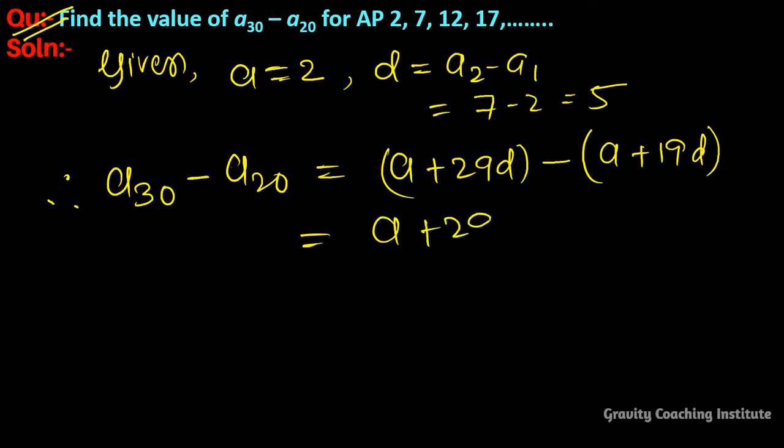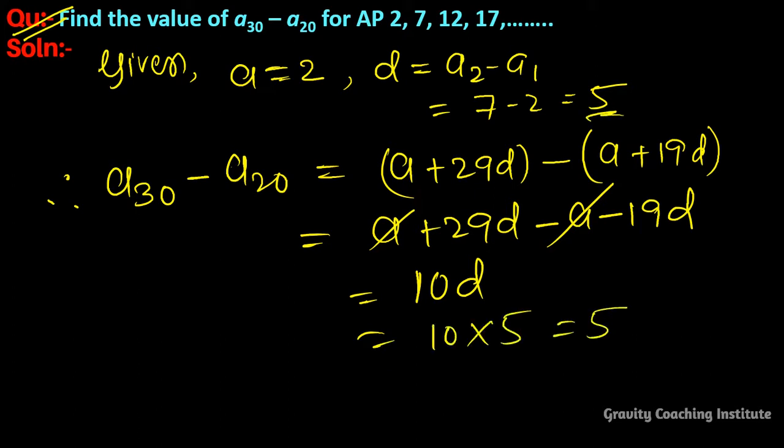And now we open the bracket, so its sign will change. So here, a cancels. So equal to 10d. And the value of d is equal to 5, so 10 into 5 is equal to 50, answer.